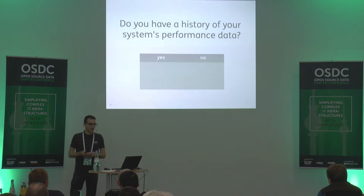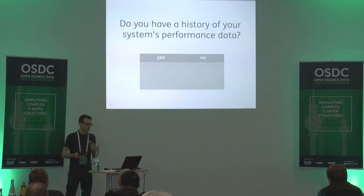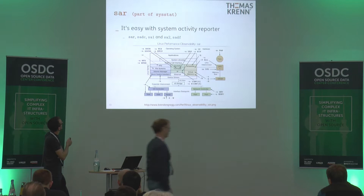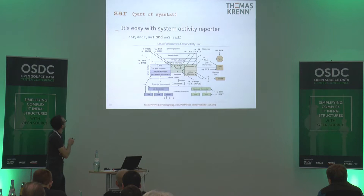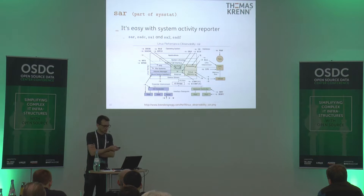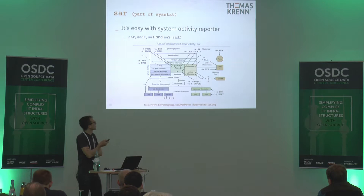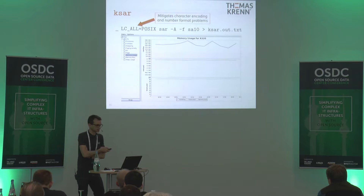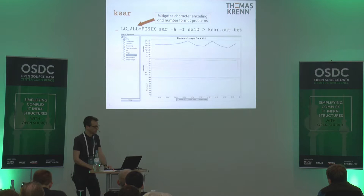Munin is also a good thing; there are also possibilities to use tools like Graphite. In case you are one of those who don't collect data right now, there's also a simple tool which can be easily used. It's part of SYSSTAT — the System Activity Reporter. It has multiple tools: one collects the data, and other tools are used to output or query the data later on. System Activity Reporter collects data from multiple points from the PROC file system, so you can use tools to monitor the data later on. For example, you could use KSAR or similar tools to view historical SAR data.